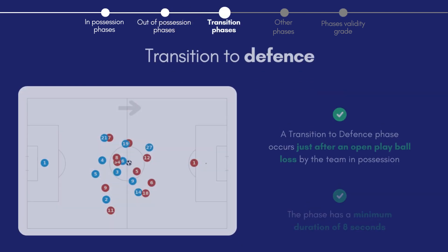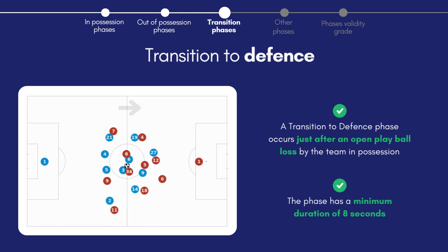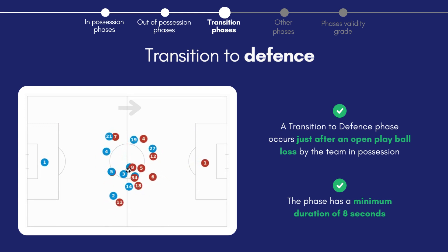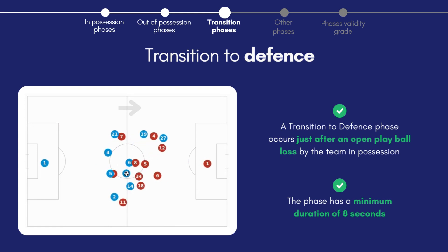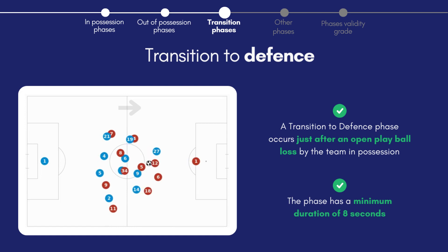Now let's look at transition phases. A team transitions to defense when the opponent regains possession following contested play or the loss of the ball. In this phase teams can either counter press or retreat into a low or medium block.